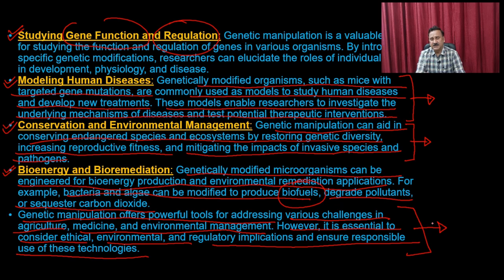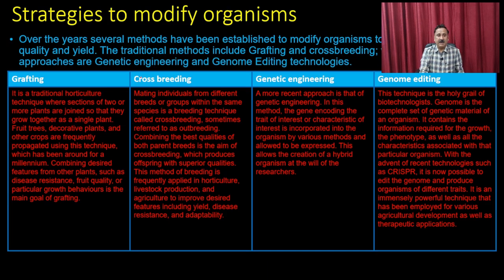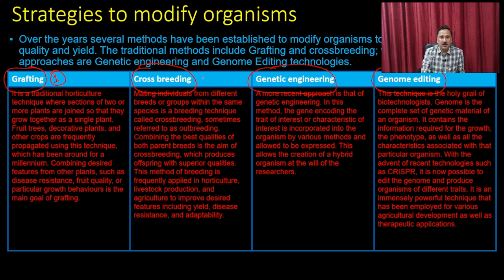What are the different strategies available to modify or genetically modify a particular organism? We have four different approaches: grafting, crossbreeding, genetic engineering, and genome editing. These are the four approaches one can use to genetically modify an organism.